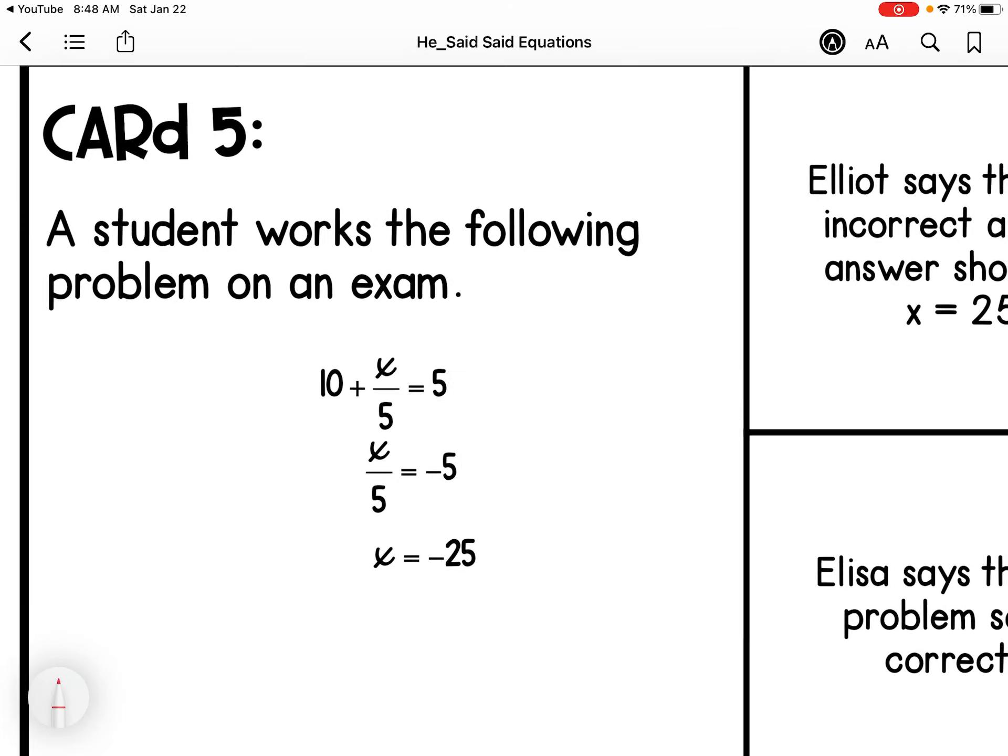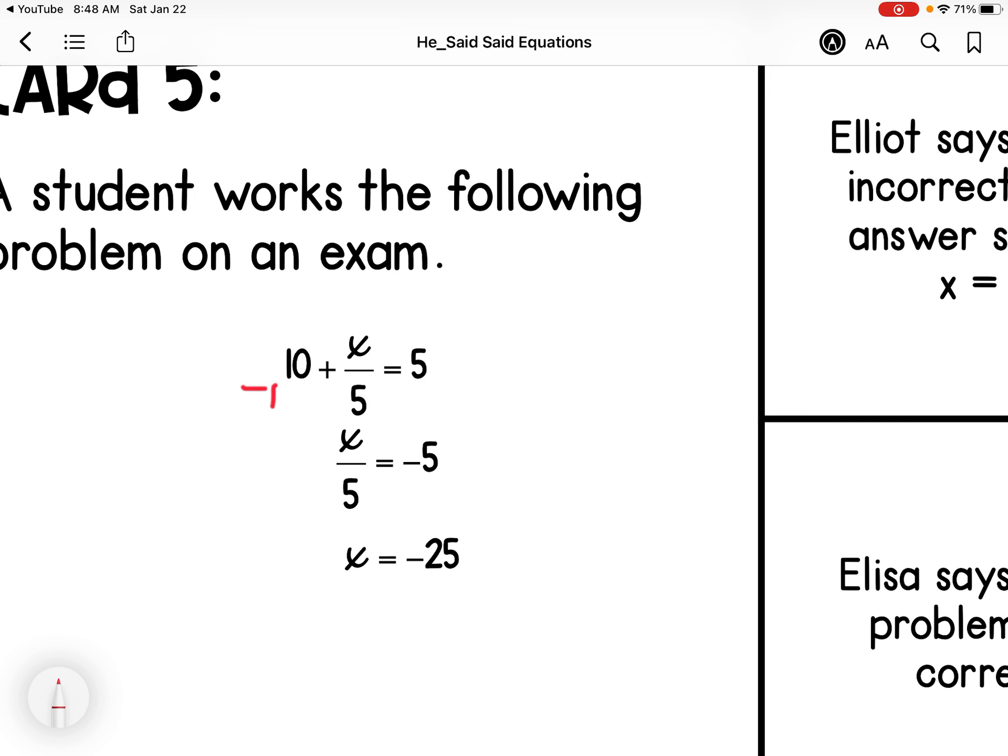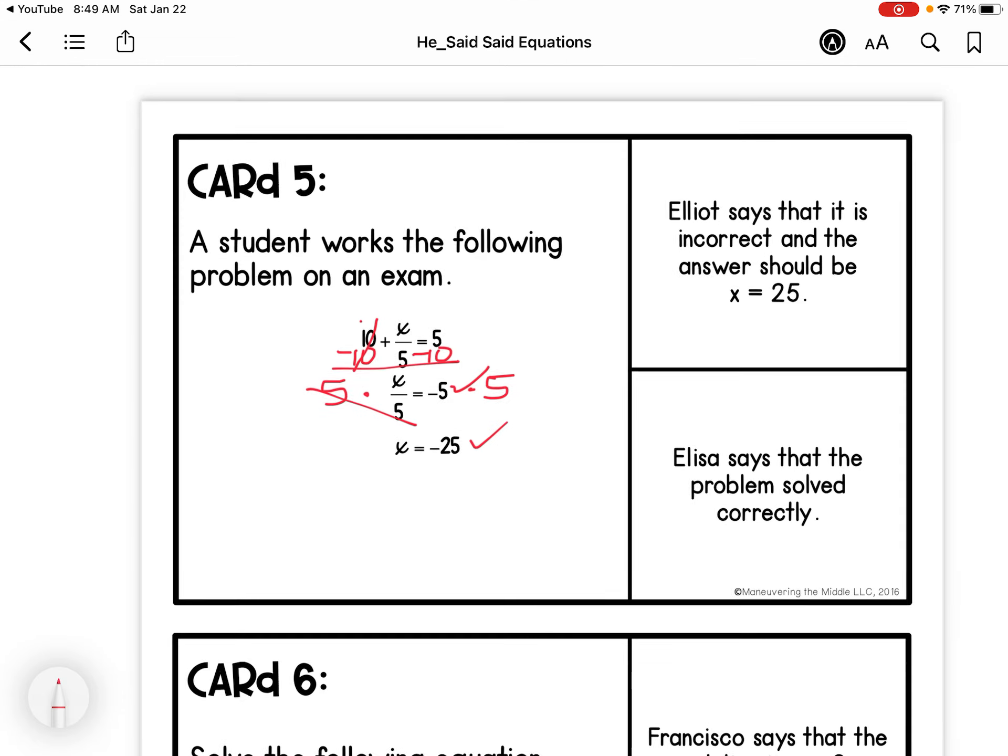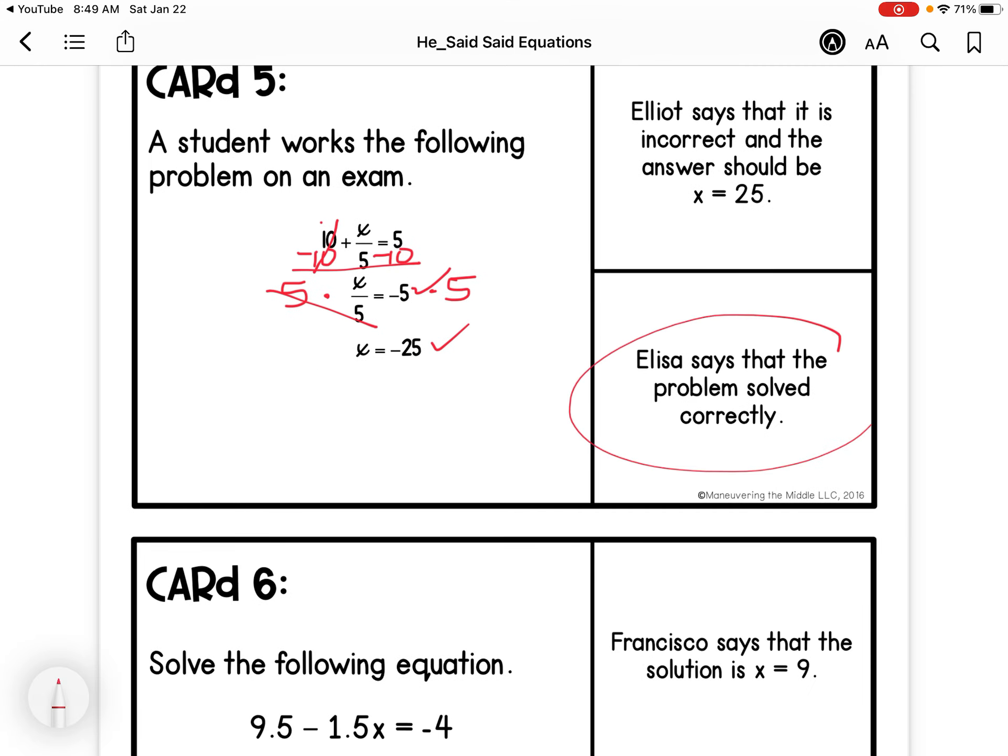A student worked out the following problem on an exam. So we're going to subtract 10 on each side. That step checks out. Then we're going to multiply by 5 on each side. That step checks out. So I agree. Eliza says the problem solved correctly.